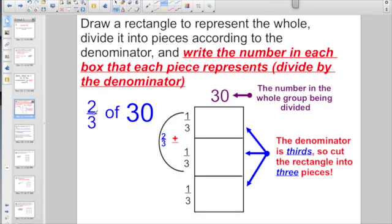If I have thirds, I'm going to divide this rectangle into three pieces. If this was fifths, I'd divide it into five pieces. And then it says, write the number in each box that each piece represents. We found out that one-third of 30 is 10, right? So you have 10 for that one-third, and you have 10 for that one-third, and you have 10 for that one-third.